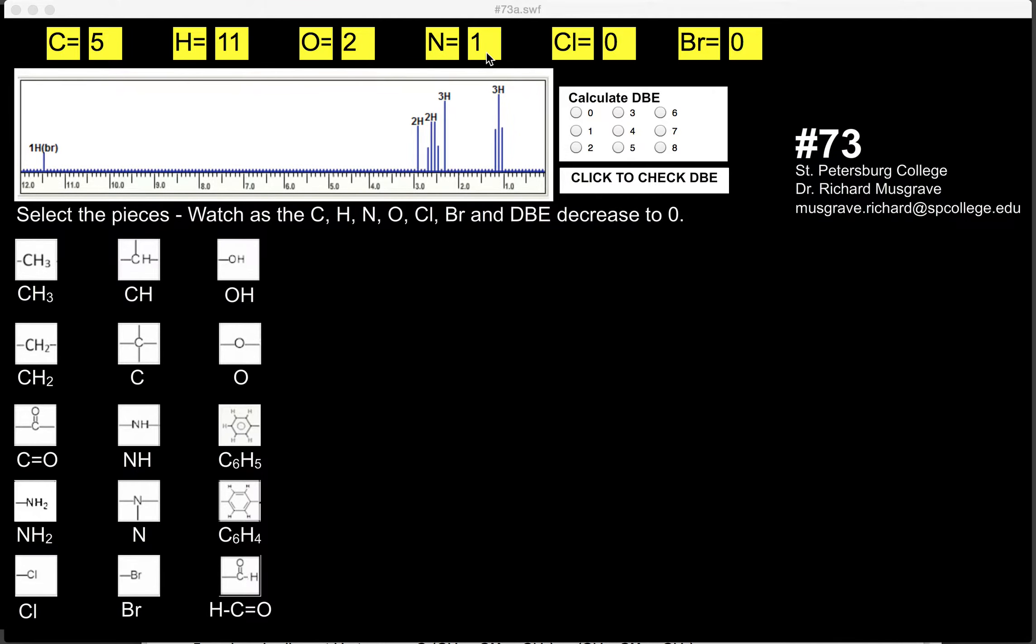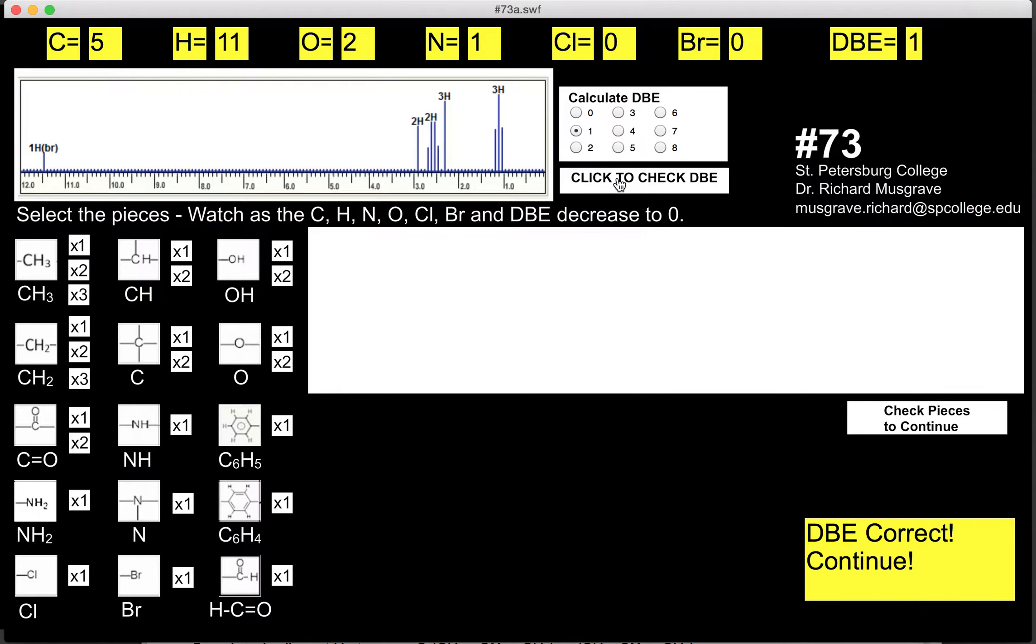This one is C5H11O2N. That would suggest that it has one double bond equivalent. We have a 1H broad over here. That's going to be an OH.